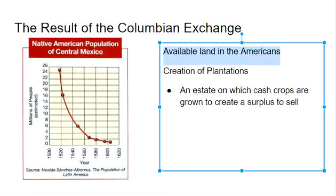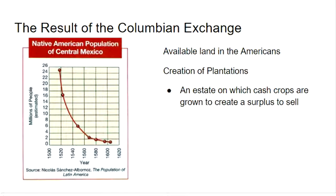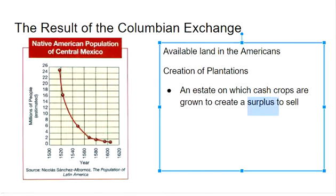So Europeans will come in and they'll create plantations. A plantation is an estate on which cash crops are grown to create a surplus to sell. They're going to be growing these goods in huge quantities — potatoes, tomatoes, corn, tobacco, sugar cane, coffee beans, and eventually a lot of cotton — growing it in surplus so that they can sell for a profit.